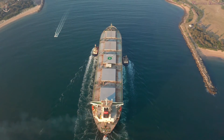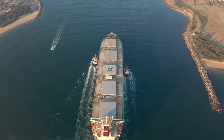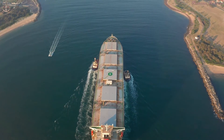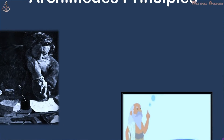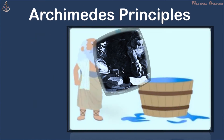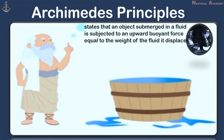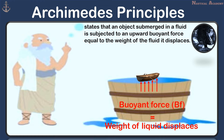So what are the principles behind why the ship can still float in the water even though it is made up of materials with greater density? The principle behind why a ship, even with a much higher density than water, can float is based on Archimedes' principle, which states that an object submerged in a fluid is subjected to an upward buoyant force equal to the weight of the fluid it displaces.